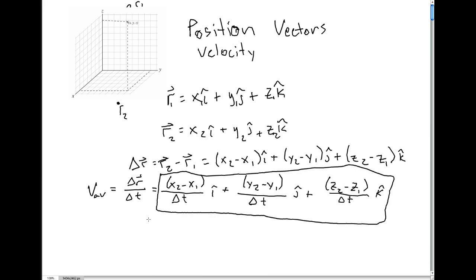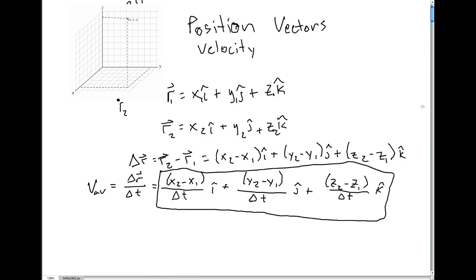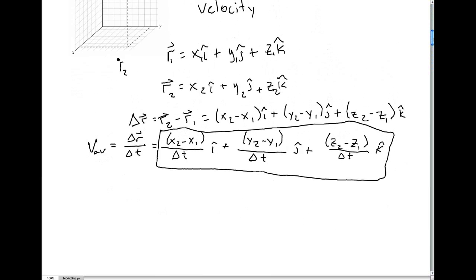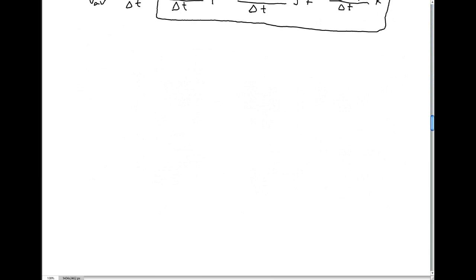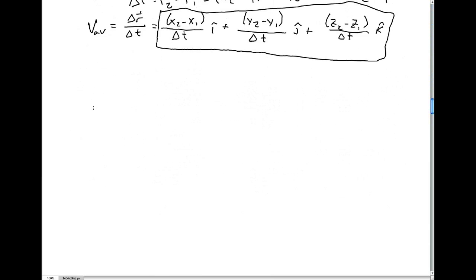Now, as we did before, our instantaneous velocity is going to happen when our delta T approaches zero. In other words, the distance between these two points become closer and closer. So if we remember, our instantaneous velocity vector is given as the limit as delta T approaches zero of delta R over delta T. Well, that is basically just the derivative of our displacement vector function with respect to time.